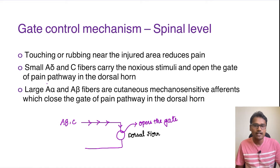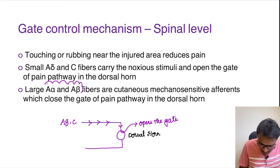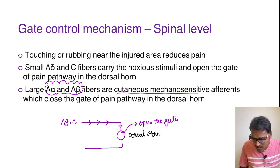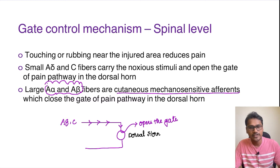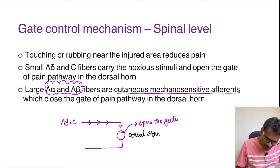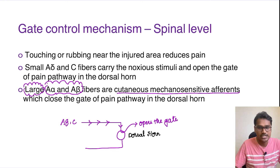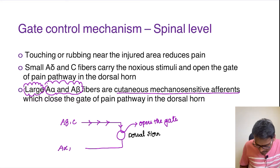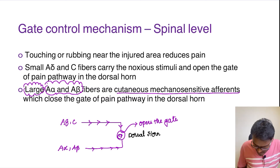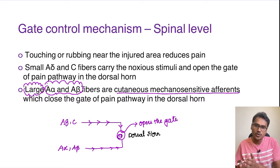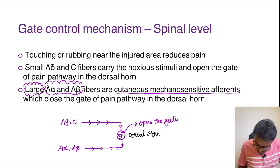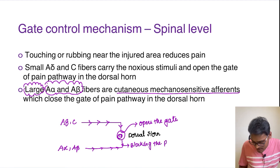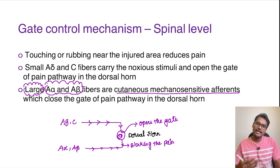There are two other different fibers: A-alpha and A-beta. These are cutaneous mechanosensitive afferents that carry the sensation of touch and other sensations. These mechanosensitive fibers are large in nature and carry a different sensation other than pain. Whenever these are activated by rubbing or shaking, these fibers go and inhibit the pain transmission mechanism — basically they block the gate of pain transmission. This is why this is called the gate control mechanism.